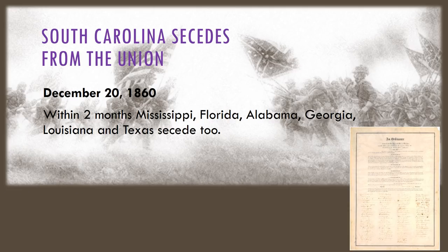Within a few weeks of the election results coming in, the first southern state made its move. South Carolina sent a letter informing Washington DC and the government of the United States that they would no longer be a part of the country anymore. They had decided to break away and create their own new country. This is called secession. South Carolina seceded from the Union on December 20th, 1860.